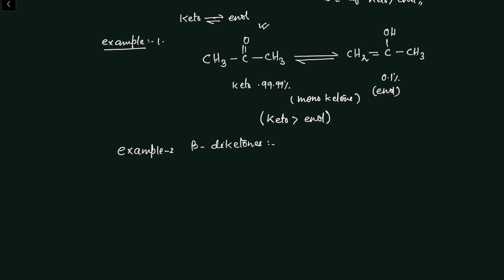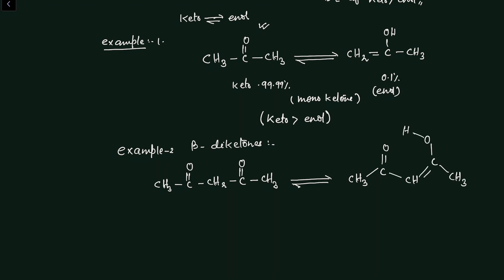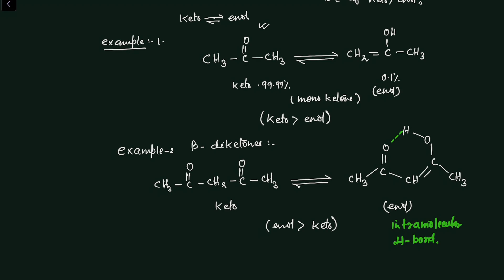Example two: the case of beta-diketones. We take this example to understand whether the keto form is always more stable than the enol form. The general example of beta-diketones is CH₃–CO–CH₂–CO–CH₃. When you check its enol form, you find that here the enol form is actually more stable than the keto form. The reason is that this enol form is able to form an intramolecular hydrogen bond, which gives it extra stability.